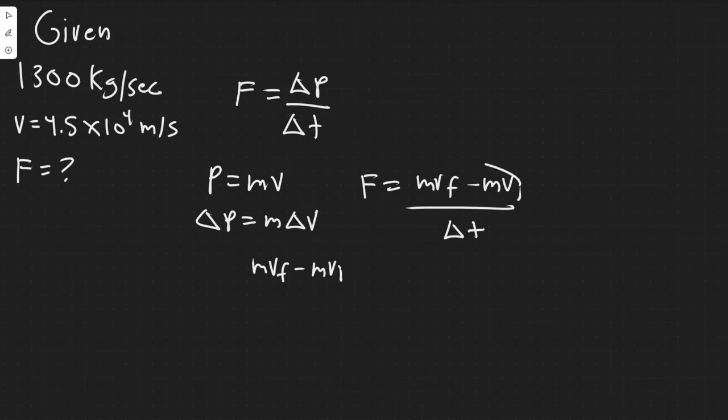So really this value is zero. So it's just mv final or the velocity that we're given divided by the change in time.